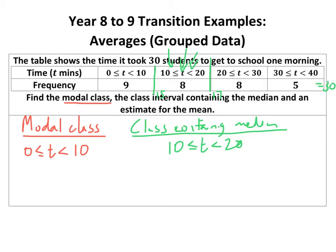The last part is to estimate the mean. Because we don't know exactly what value each student recorded — only that these nine are within naught to ten, and these eight within ten to twenty — we assume everyone is right in the middle of their group. So we find the midpoint of each class. The midpoints are five, 15, 25, and 35 — slap bang in the middle. If it's not obvious, just add the class limits and halve them.